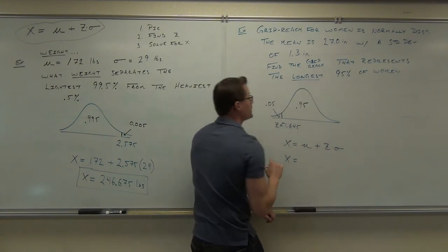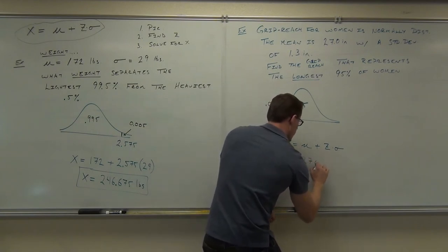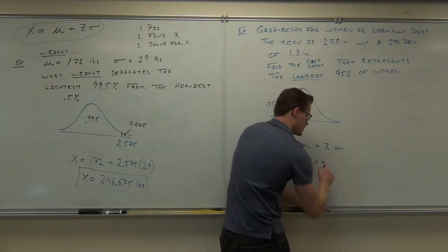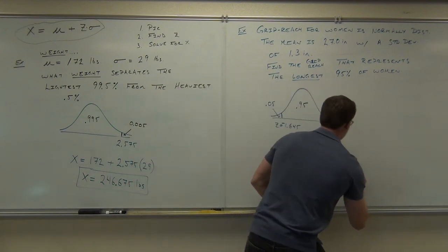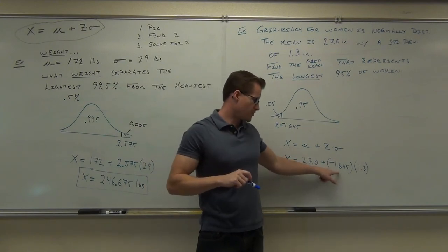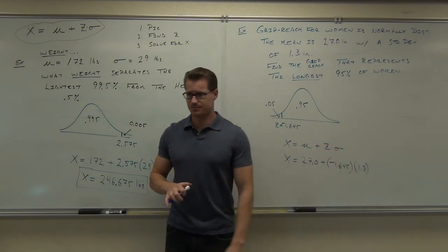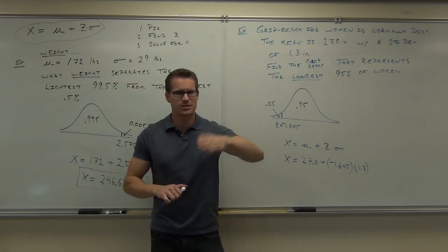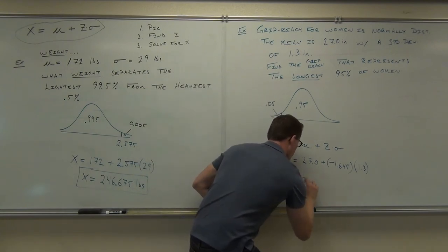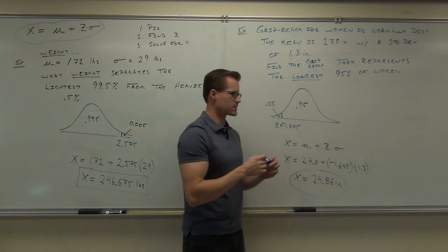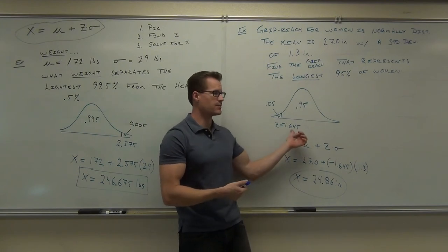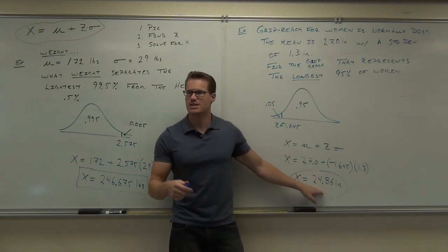Now when you find your x value, x of course is the mean plus the z times the standard deviation. So in our case x is the mean which was 27, plus the z which is - what's the z again? Negative 1.645. I'm going to put that in parentheses so you know that's a negative, that way we don't lose that, times 1.3. So order of operations says we're going to take negative 1.645 times 1.3 and then add on that 27 to it. What do you get? You should get something less than 27, shouldn't you?